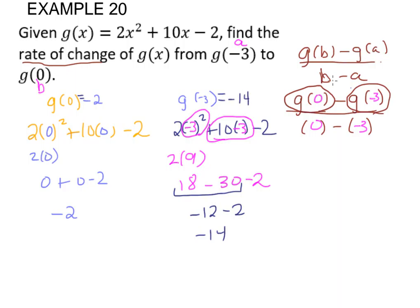Now we come over here. We plug in those values. g of 0 is 2—sorry, negative 2—minus g of negative 3 was negative 14, all over 0 minus a negative 3.